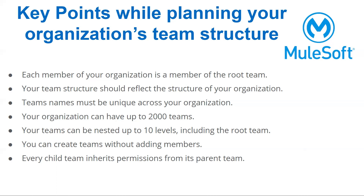You won't see any permissions - you need to explicitly add them. Second point: your team structure should reflect the structure of your organization. This will help you, especially if you have scalability in mind, to know where to add a new team or a new user seamlessly. Team names should be unique across your organization. Your organization can have 2000 teams, and teams can be nested up to 10 levels in a hierarchy. You can create all the teams first in the blueprint, and then once onboarding starts, add users to the respective teams appropriately.